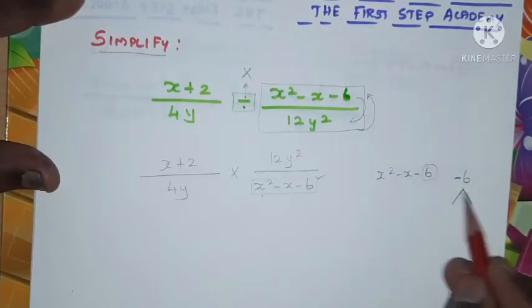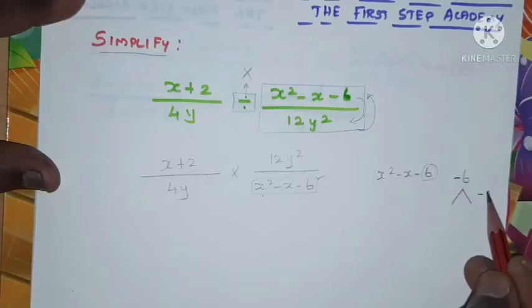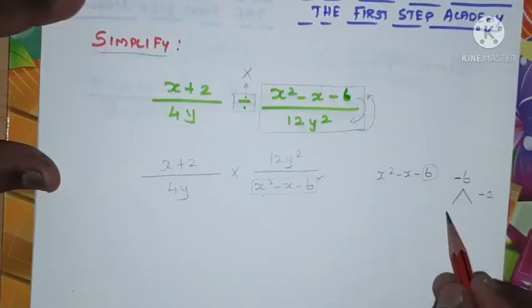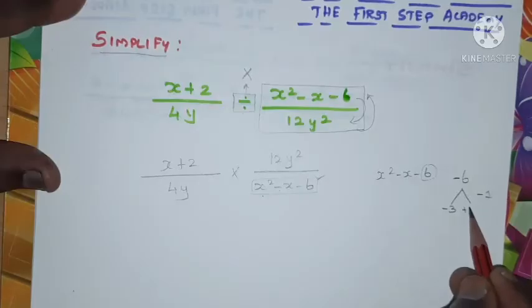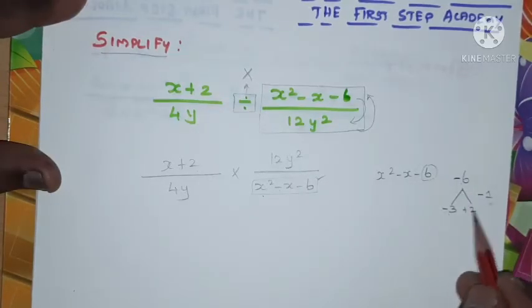When I multiply two numbers that should provide -6, when I add those two numbers that should provide -1. So the values are -3 and +2. So -3 times 2 is -6 and -3 plus 2 is -1.